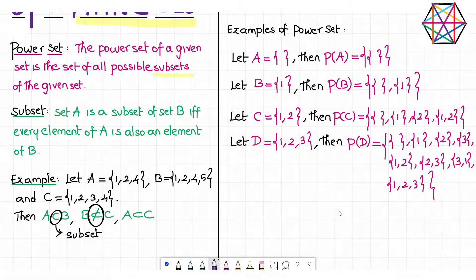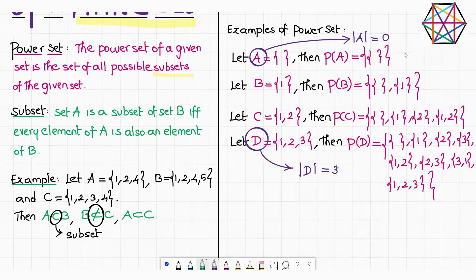Now what's the meaning of cardinality? It is just a fancy terminology to denote the number of elements in a given set. It is denoted by the same notation that we used in the case of absolute value. But you don't read it as absolute value, you read it as cardinality of the given set. It will look like this. Cardinality of set A is 0. Cardinality of the set D is 3.